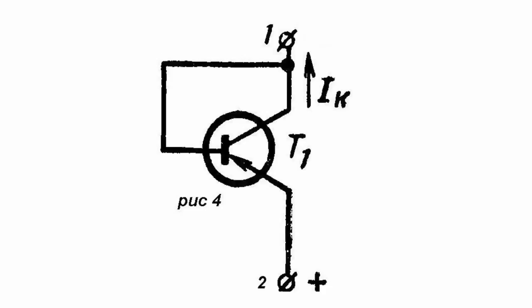It is easy to see that in this case it acts as a short circuit for power current flowing from clamp 1 to clamp 2.